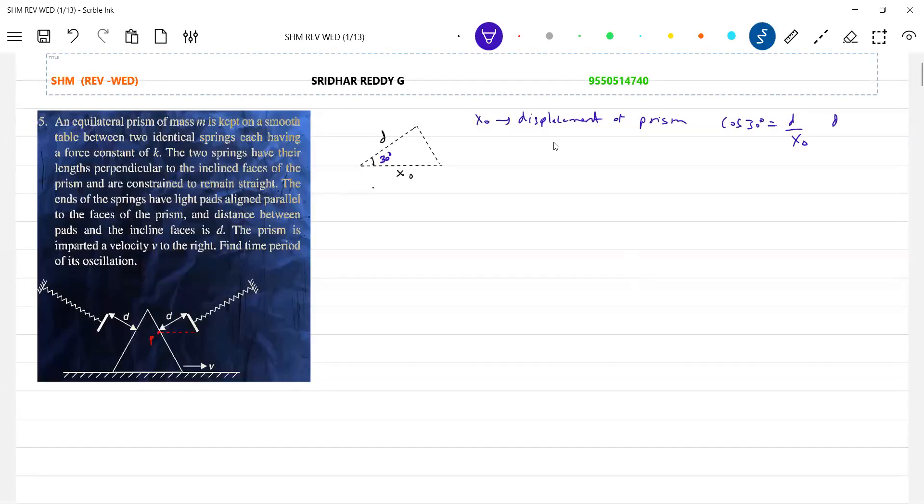So therefore this D will be... For the prism to come in contact with the spring, it has to cover a distance. How much? X naught. It has to move a distance X naught here.